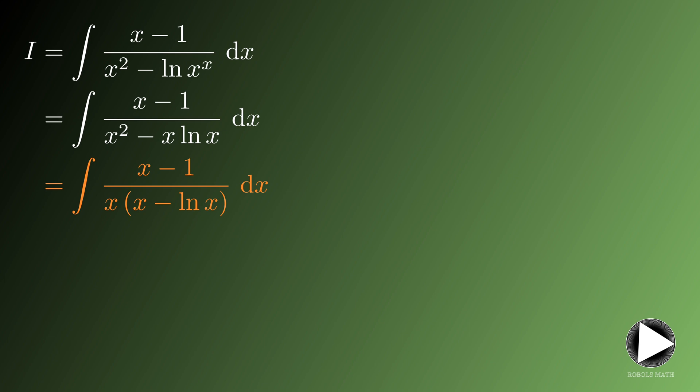Now the x in the denominator can be regrouped into the numerator such that the numerator will become x minus 1 all over x and the denominator should become simply x minus ln x. We simplify the numerator further to make it 1 minus 1 over x.